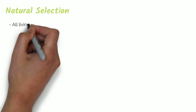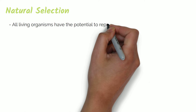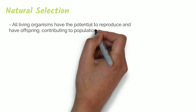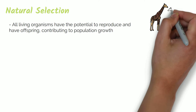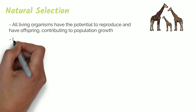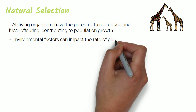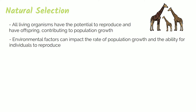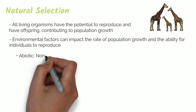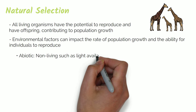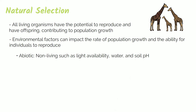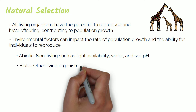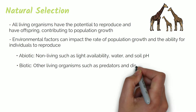All living organisms have the potential to reproduce and have offspring, contributing to population growth. However, environmental factors can impact the rate of population growth and the ability for individuals to reproduce. These environmental factors can be abiotic — non-living — such as light availability, water and soil pH, or biotic — other living organisms — such as predators and disease.